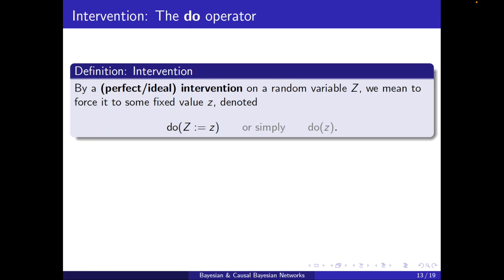Let me make things more mathematical. We have the do-operator. By a perfect ideal intervention on a random variable Z, we mean forcing it to some fixed value z. The notation is do(Z = z), or simply do(z), and we use a double colon to indicate that it is forced to the value z.